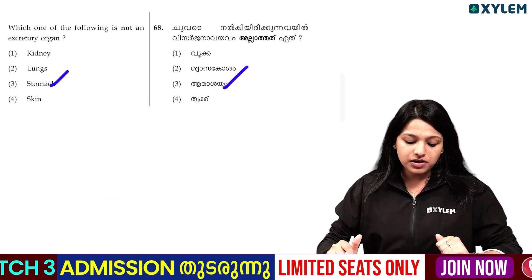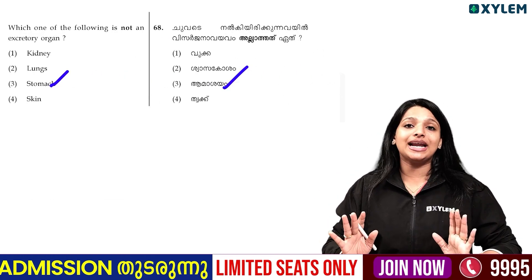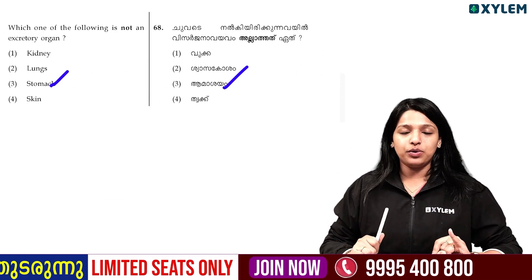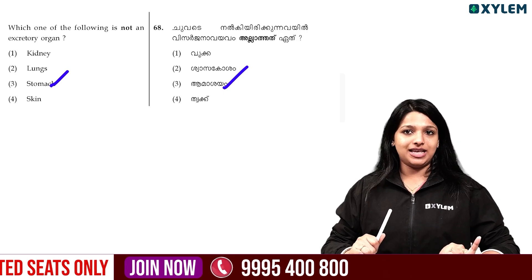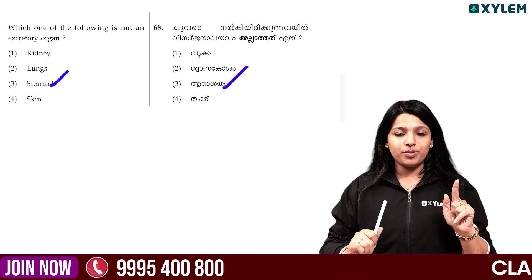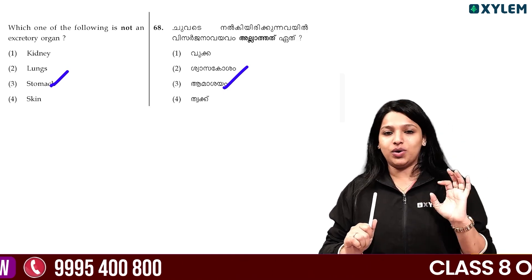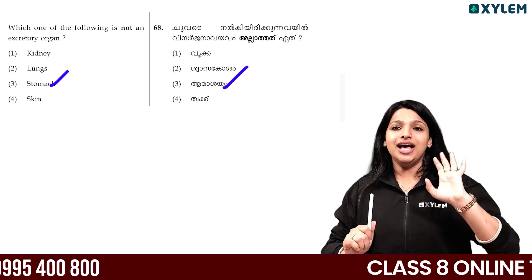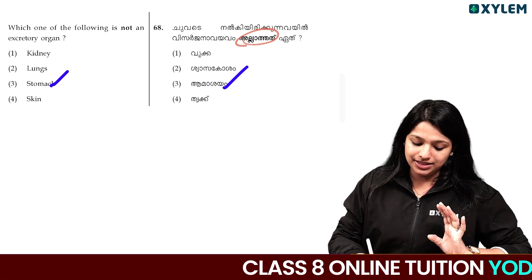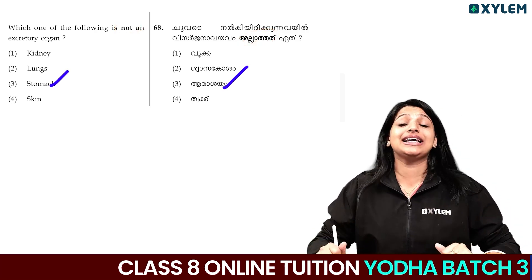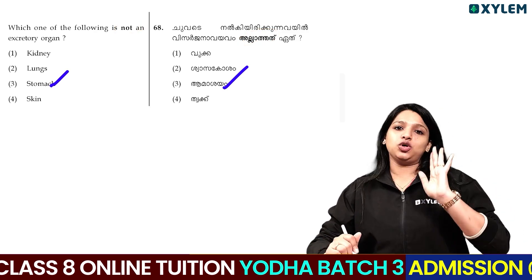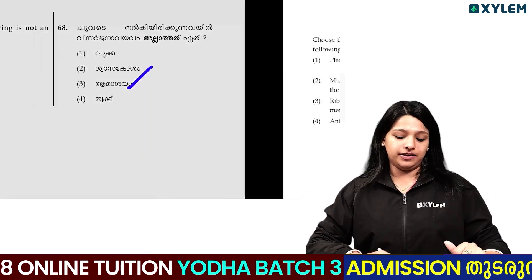Which one of the following is a non-excretory organ? Kidney is one of them. Shwasakosham is one of them. Stomach is not an excretory organ — this option is not an excretory organ. Stomach is the answer.